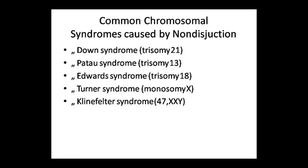Common chromosomal syndromes which we get from non-disjunction are: Down syndrome (trisomy 21), Patau syndrome (trisomy 13), Edwards syndrome (trisomy 18), Turner syndrome (monosomy X), and Klinefelter syndrome (47, XXY). Remember their names as well, because Down syndrome in particular comes up in questions.